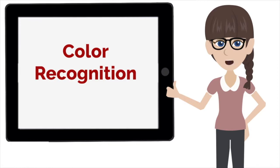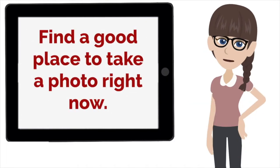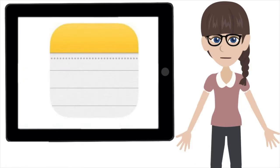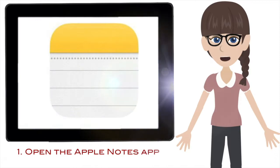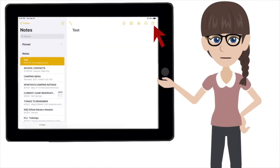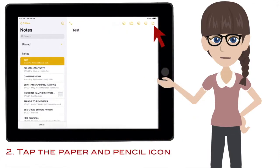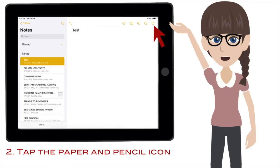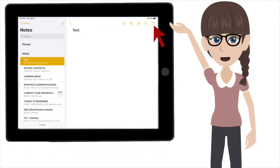Our first lesson will be on color recognition. We will be using a photo, so I suggest creating a scene in your classroom somewhere that has lots of different colors for students to take a picture. Wherever you are completing this lesson, have an area in mind that is colorful where you can snap a quick photo when it's time. So once the scene is set, open the Apple Notes app. Once inside the app, tap the paper and pen icon to start a new note.